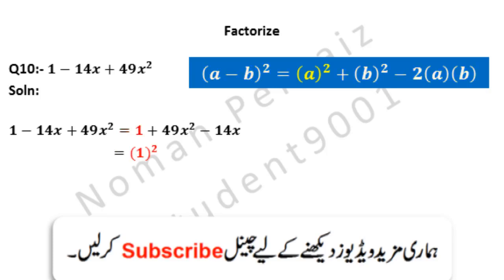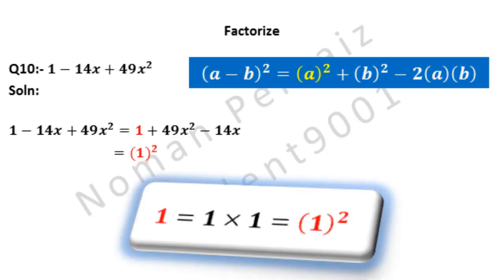1 can be written as 1 whole square. Look at the additional details given below: 1 equals 1 multiplied by 1, and it becomes 1 square. Looking at the formula above, 1 whole square is our a square.